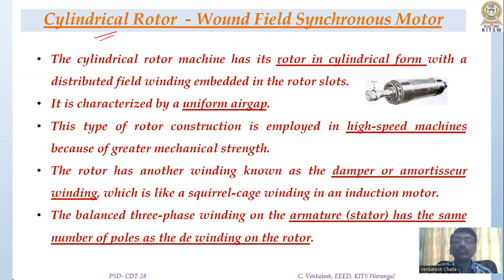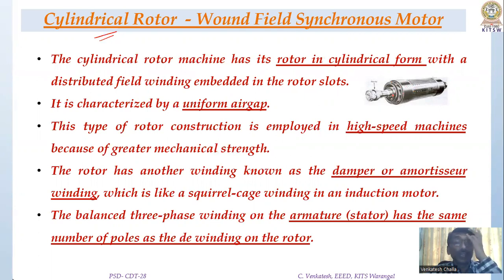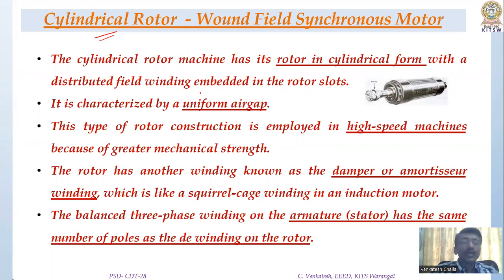For the cylindrical rotor wound field synchronous motor, the rotor is in cylindrical form with a distributed field winding embedded in the rotor slots. The field winding is distributed throughout the rotor slots. The advantage of the cylindrical type rotor is that it has uniform air gap and hence is used for high speed machines.